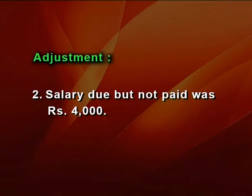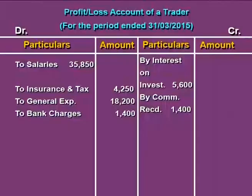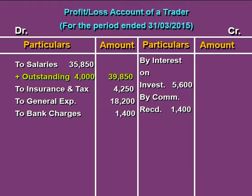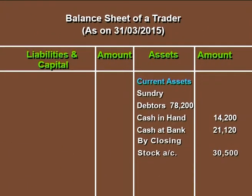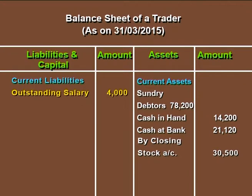The next item: salary due but not paid was Rs 4,000. We are talking about outstanding salaries. Outstanding expenses are added to the concerned expense. This outstanding salary of Rs 4,000 has been added to the salary of Rs 35,850 given in the inner column to give effect to this adjustment. Outstanding expenses are liabilities on the business, so this Rs 4,000 has been reported as a current liability in the balance sheet.